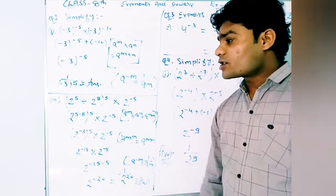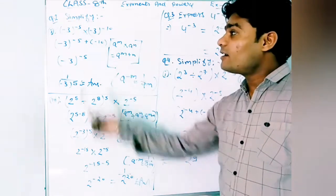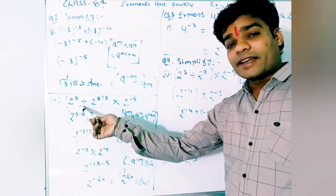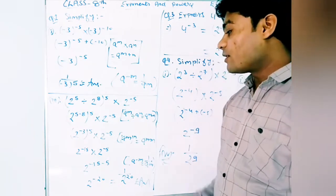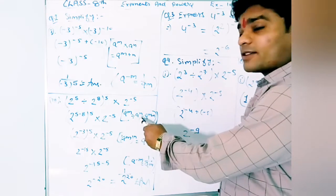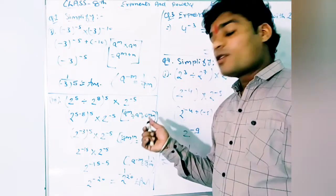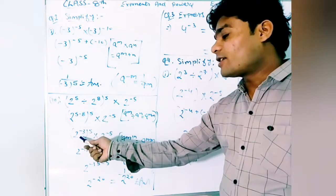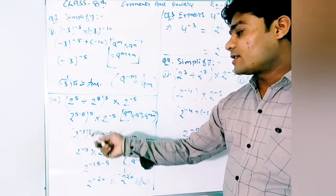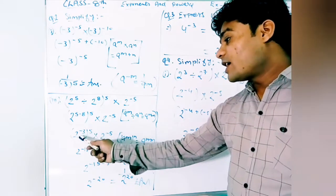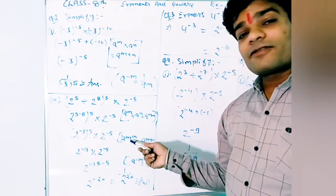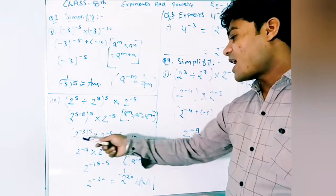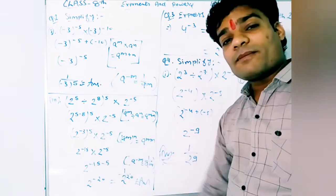In the second part of question 2, division is involved. The base is the same but we have both divide and multiply operations. We use the law: when base is same and powers are different and we divide, we subtract the powers. So 5 minus 8 gives minus 3. That power is kept as is, and combined with the multiplicative term, base becomes common and minus 3 into 5 gives minus 15.